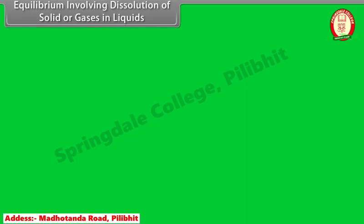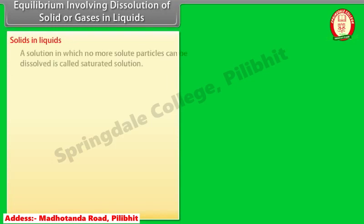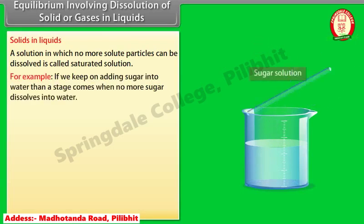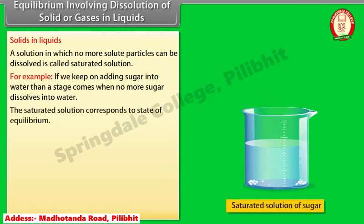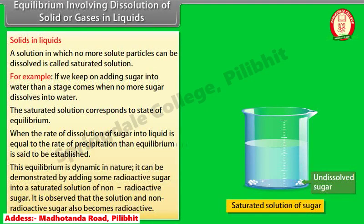Equilibrium involving dissolution of solid or gases in liquids. Solids in liquids: a solution in which no more solute particles can be dissolved is called a saturated solution. For example, if we keep on adding sugar into water, a stage comes when no more sugar dissolves. The saturated solution corresponds to the state of equilibrium. When the rate of dissolution of sugar into liquid is equal to the rate of precipitation, equilibrium is said to be established. This equilibrium is dynamic in nature.